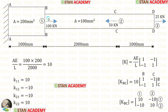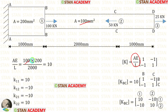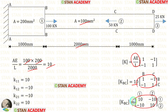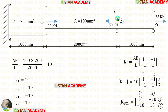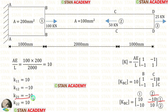Now let us make the element stiffness matrix for bar BBCC. Let us find AE upon L: area is 100, Young's modulus is 200, length is 2000. After the calculation we get 10. Let us multiply 10 with this matrix to get the element stiffness matrix. In section BB we have the first coordinate, so let us name the first row and first column as 1. In CC we have the second coordinate, so let us name the second row and second column as 2. Now let us take out the stiffness matrix elements: K11, K12, K21, and K22.